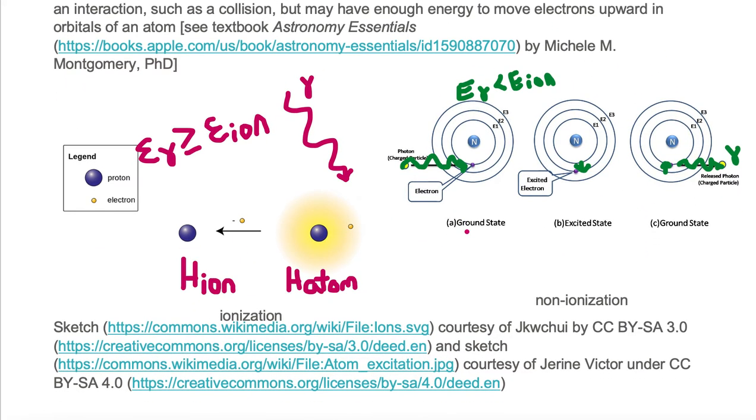In the case on the left of ionizing radiation, we have a particle that's coming in, which in this case is a photon, and that particle has enough energy to ionize this electron or remove the electron from the bound atom.